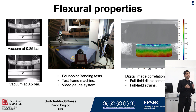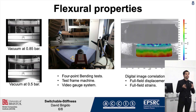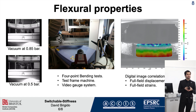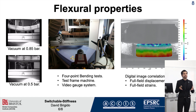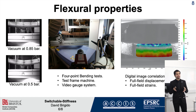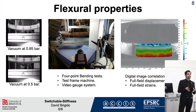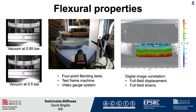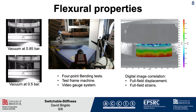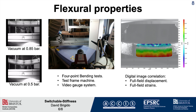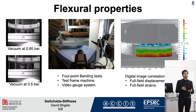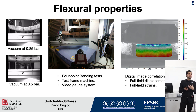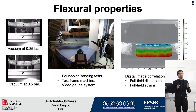It's also important to mention that we need to understand the flexural properties of granular jamming. To do that, we tested it in four-point bending using a test frame machine and a video gauge system. With that and with digital image correlation techniques, we can map the displacement and the strain along this device, which allows us to understand the global mechanical behavior in bending.